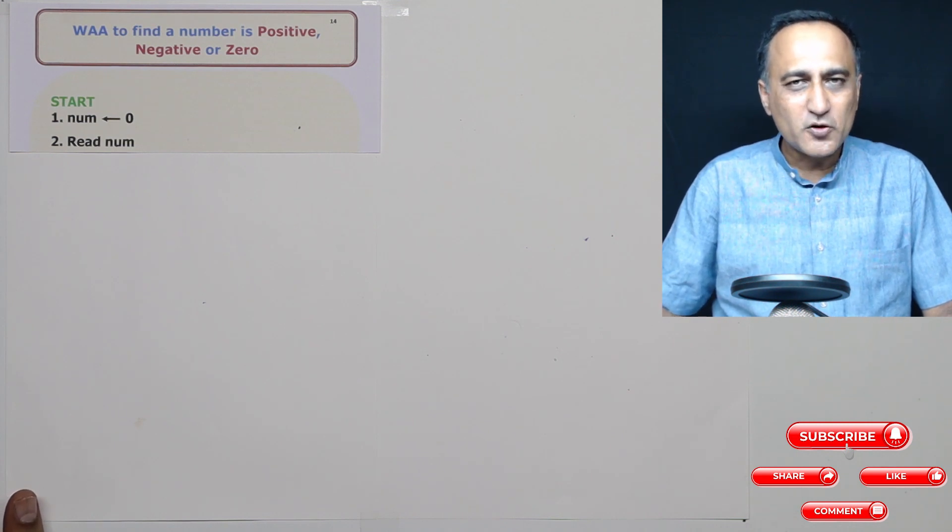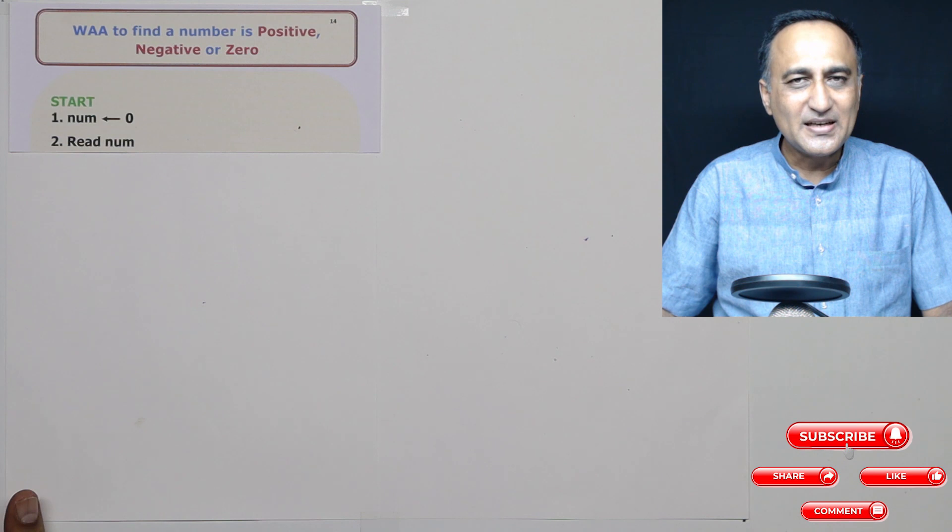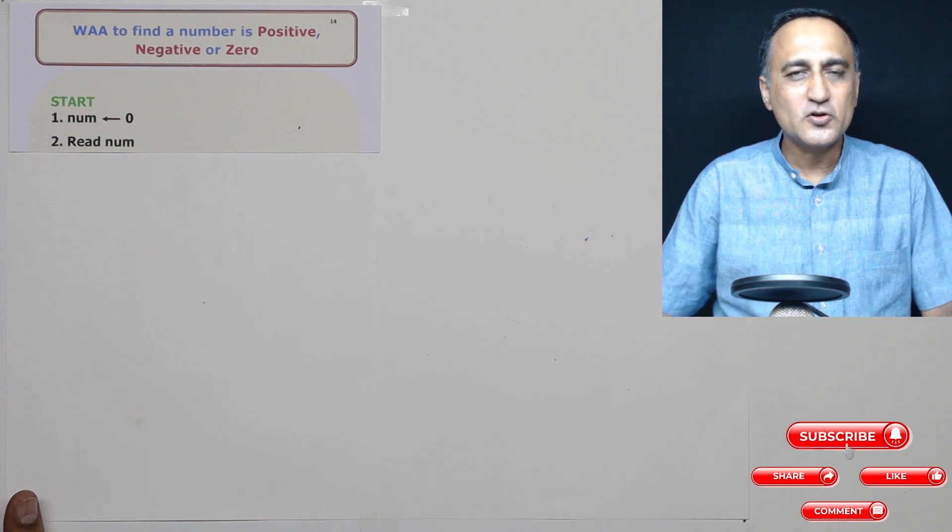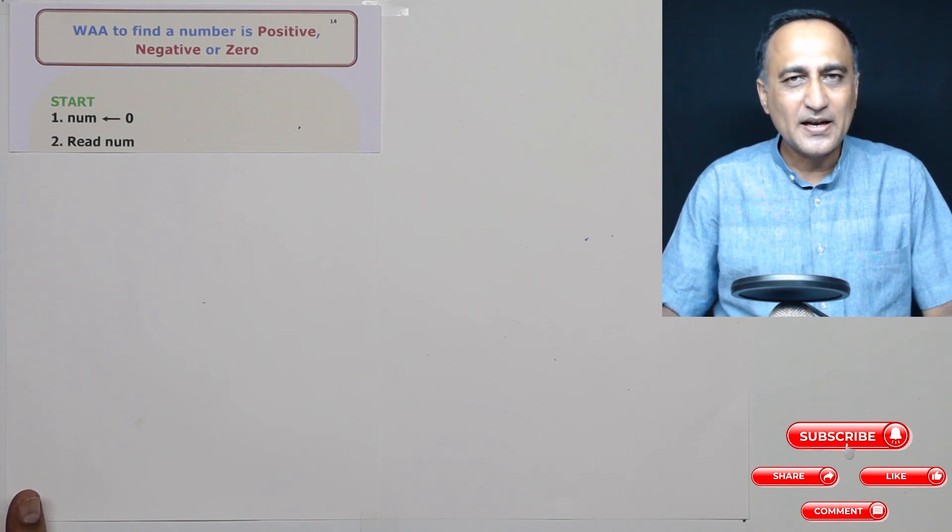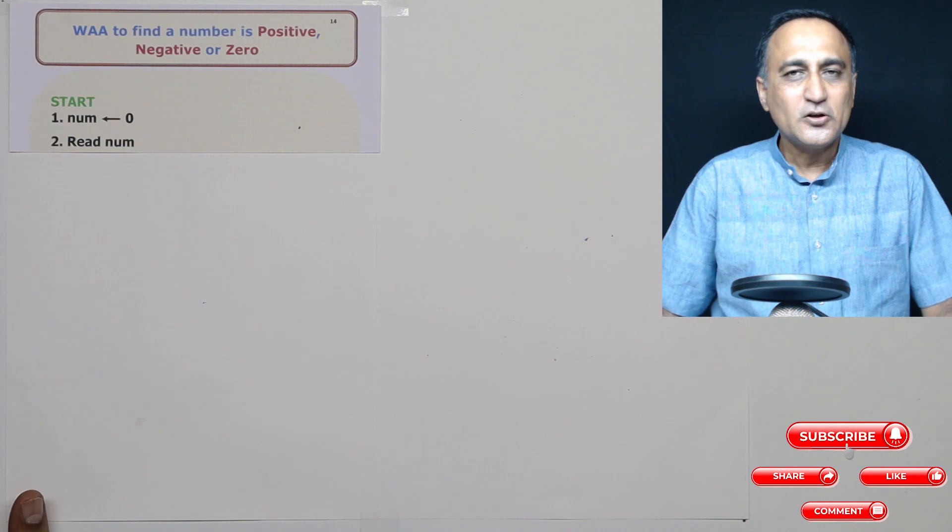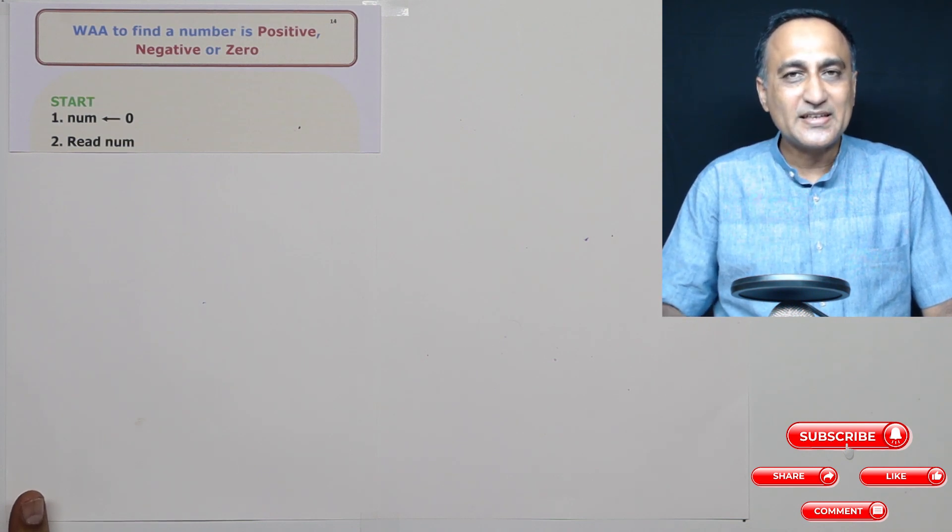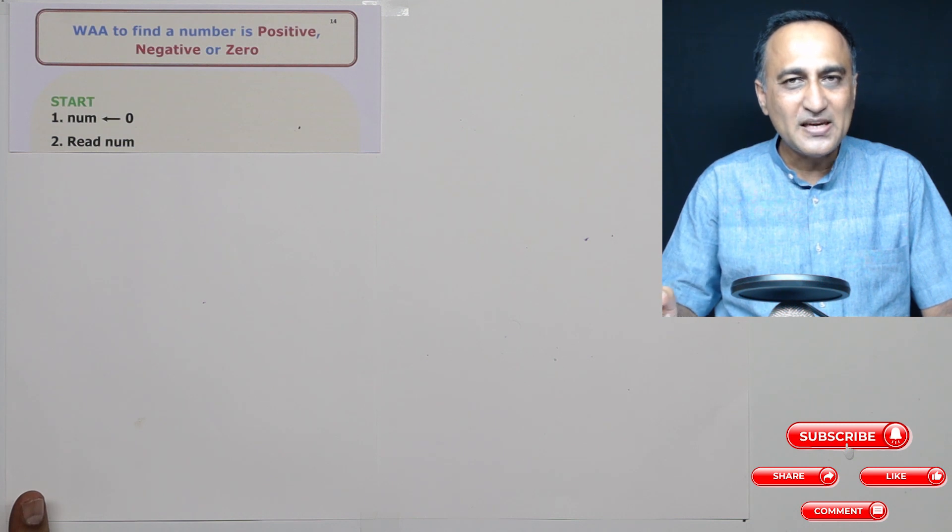I am first going to check if the number is greater than zero. So what I will say is if number is greater than zero, then print number is positive. So now I have eliminated the possibility that the number is positive. So if the number is not positive, what are the other two possibilities? It can either be negative or it can be zero.